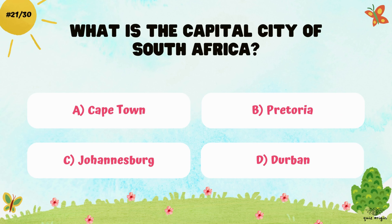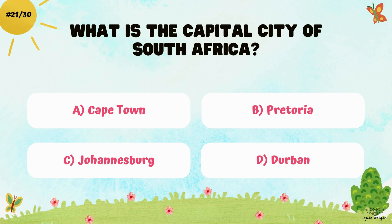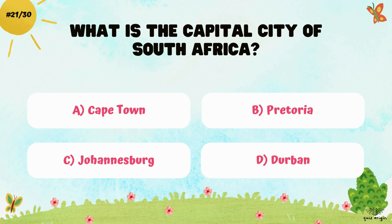What is the capital city of South Africa? A. Cape Town, B. Pretoria, C. Johannesburg, and D. Durban.